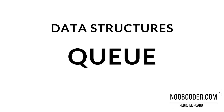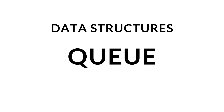Hey, what's up guys? It's Pedro here from Noobcoder.com. And in this tutorial, we are going to be talking about queues. A queue is a linear data structure that can be implemented using an array or a linked list. Within this video, we'll be going over how to implement a queue using an array.